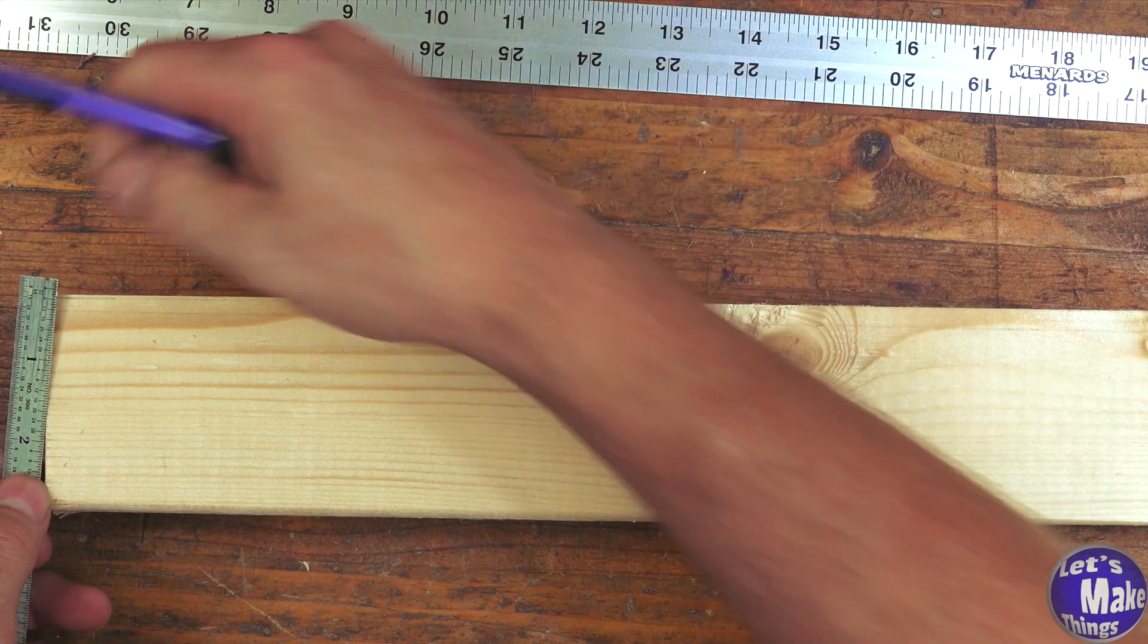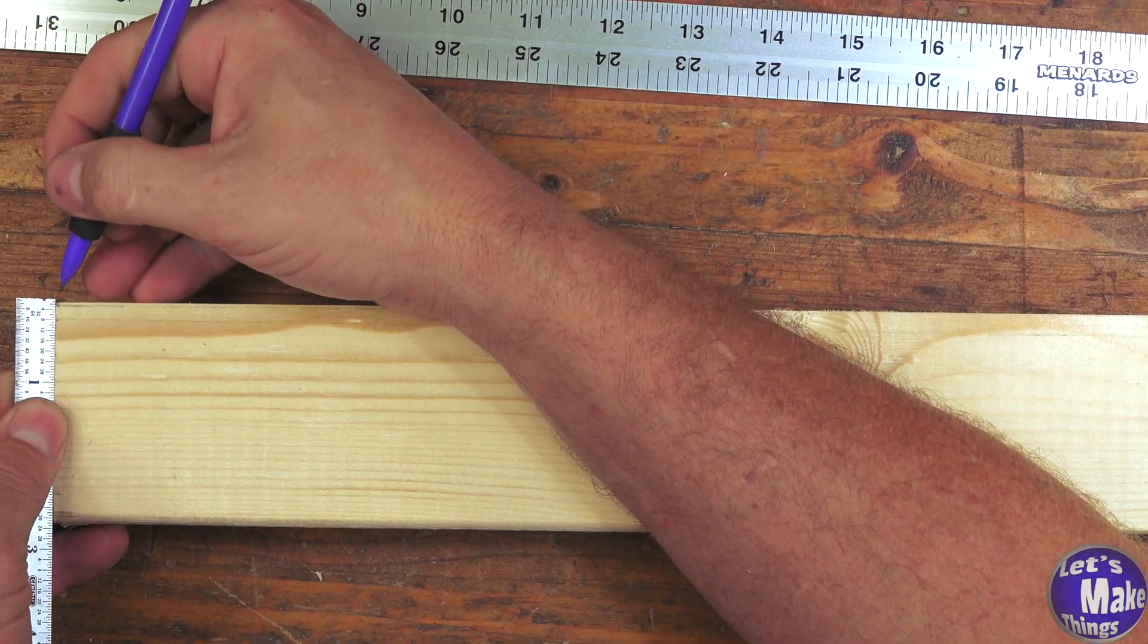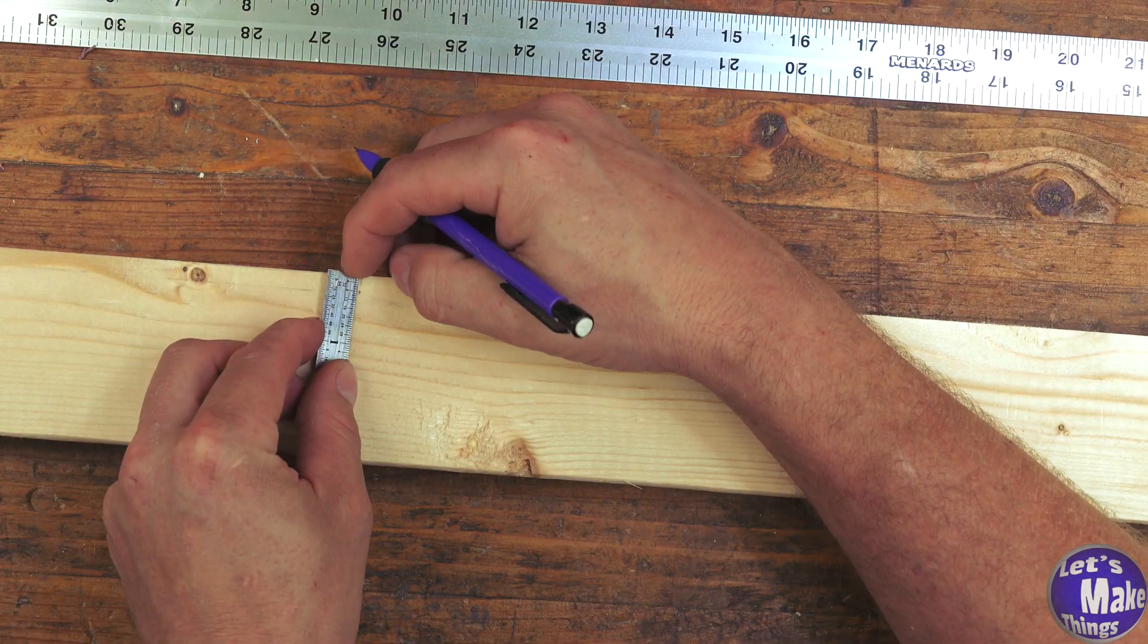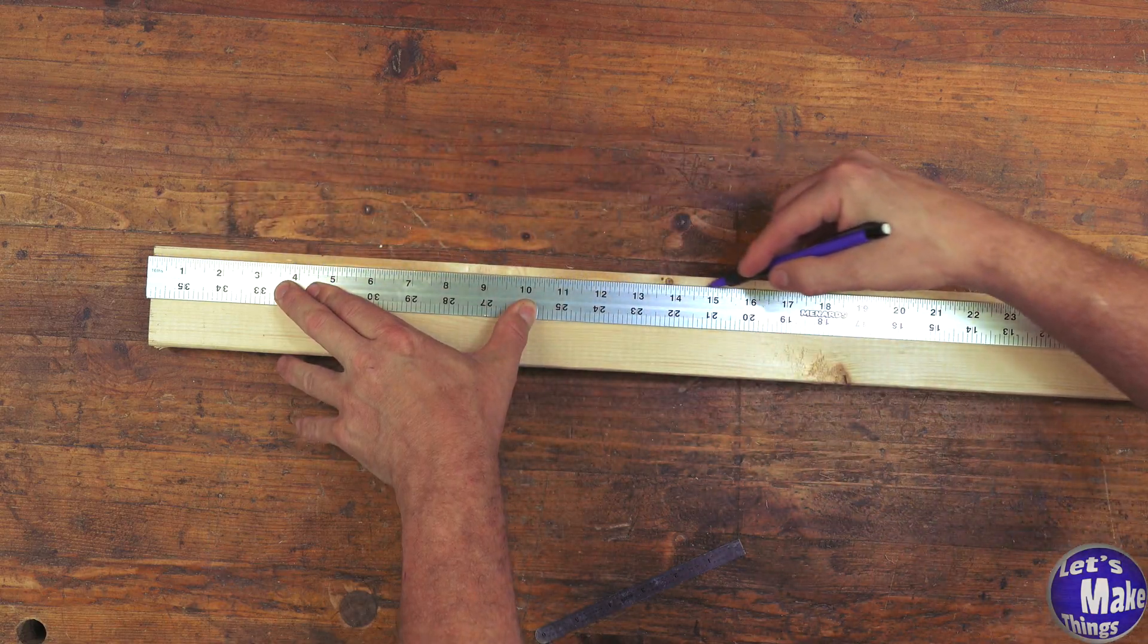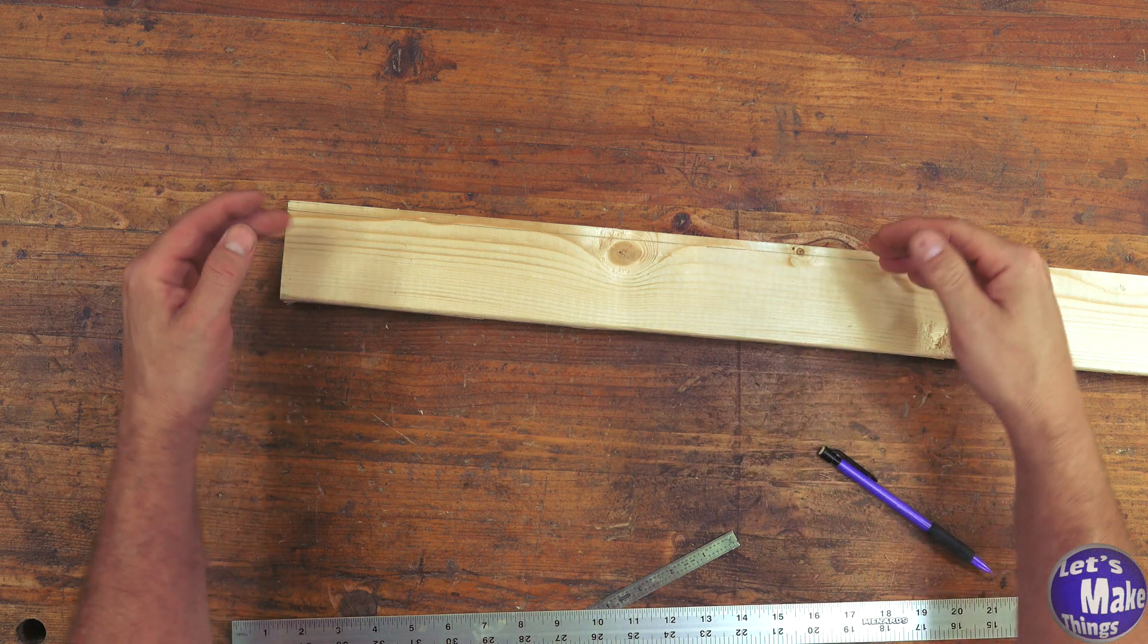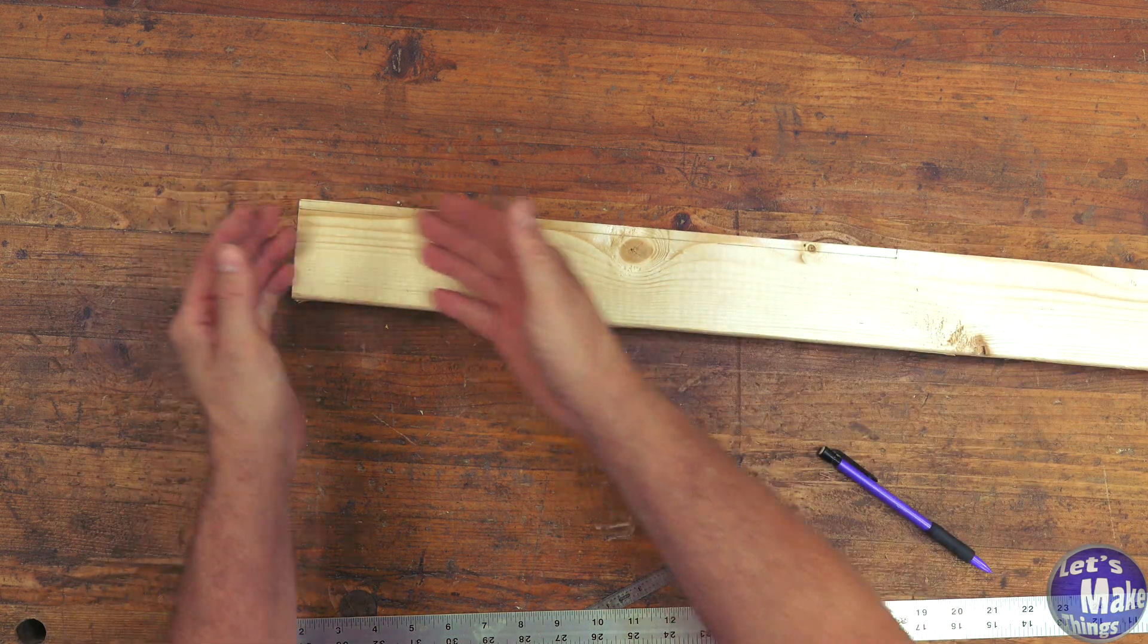We could instead come down here a quarter of an inch, and then in the center, we'll drop down to 7/32nds of an inch. Now we'll connect our lines, and then we could cut this with our bandsaw, which would be using both teeth, but then we're wasting a lot of wood.